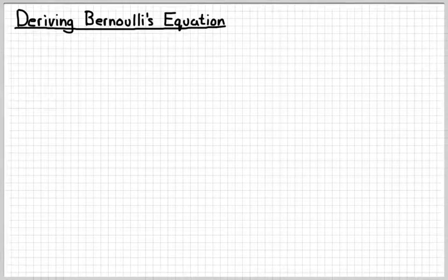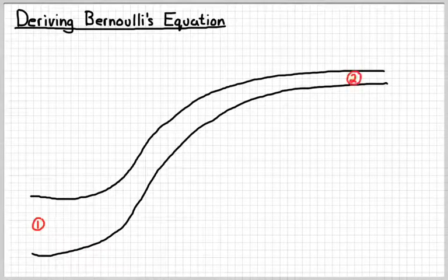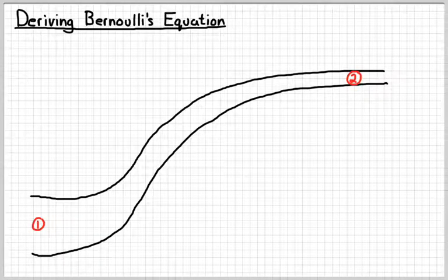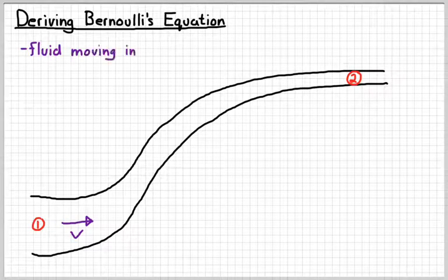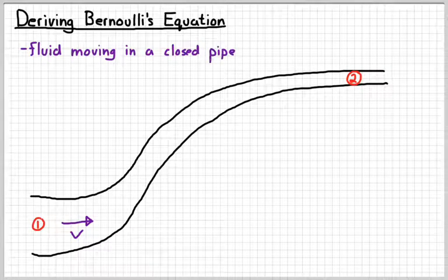So let's go through and derive Bernoulli's equation. We're going to start with an example of a pipe that looks something like this. It's wider at point one and it's lower at point one. And we're going to say our fluid is moving to the right. So it goes from point one to point two in a closed pipe. So that means that the air from the outside isn't interfering and there's no fluid leaking or anything like that.